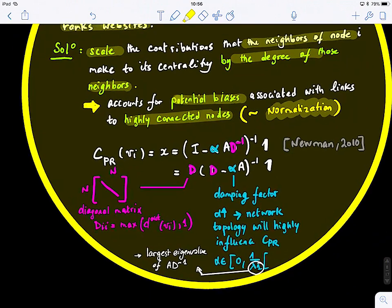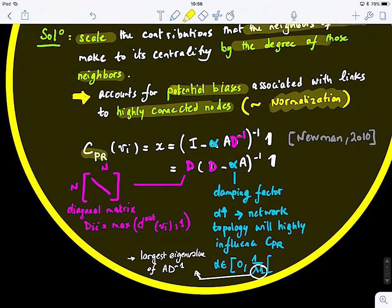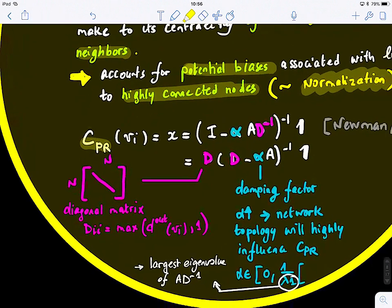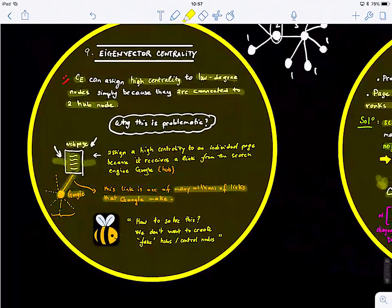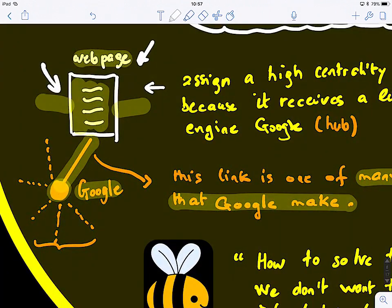Here, this is the definition of PageRank Centrality. So, what they're defining here, they're defining a diagonal matrix. So, this diagonal matrix, in this case, we're still operating in directed graphs. So, it just stores the maximum of the outdegree of node VI in 1. So, it's like a diagonal matrix. And then, what we have, we have a damping factor alpha. And this is actually, it will tell us how highly we want the topology of the network or the graph to influence the centrality.